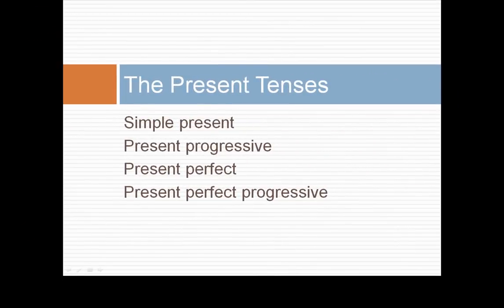Let's start with the present tenses. We have four: the simple present, present progressive, present perfect, and present perfect progressive. We'll look at examples of each tense.